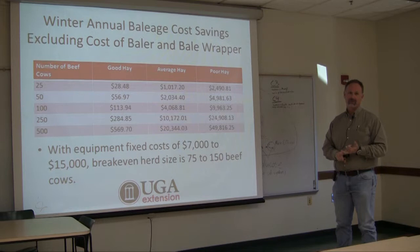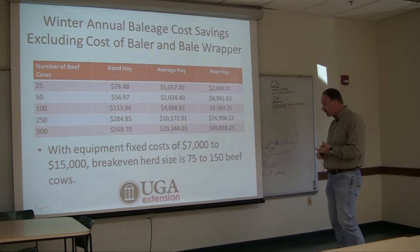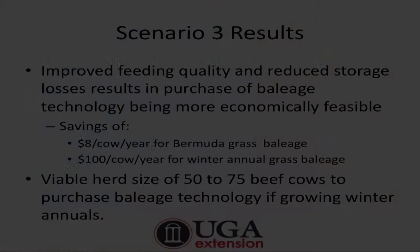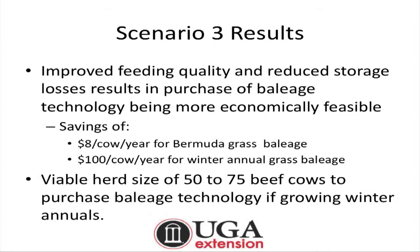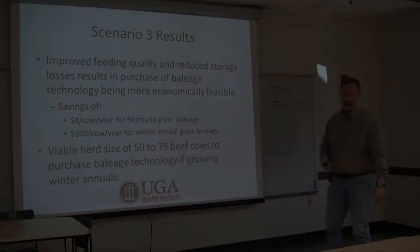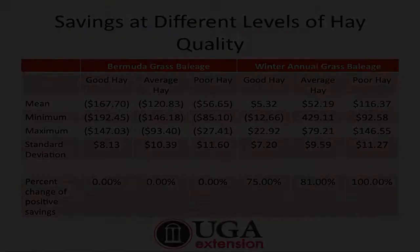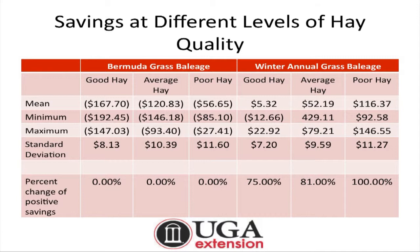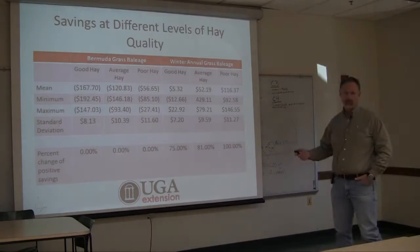The last scenario combines reducing feeding losses and feed cost by putting up higher quality forage. Overall we see a savings of $8 per cow per year for bermudagrass baleage and $100 per cow per year for winter annuals. That lowers the viable herd size down to about 50 to 75 cows depending on equipment costs. For bermudagrass baleage it typically won't pay, but with winter annuals — good, average, or poor quality conventional hay — baleage typically pays.